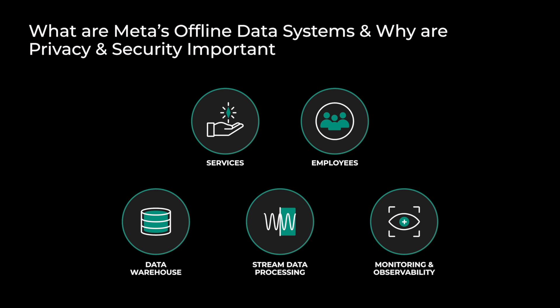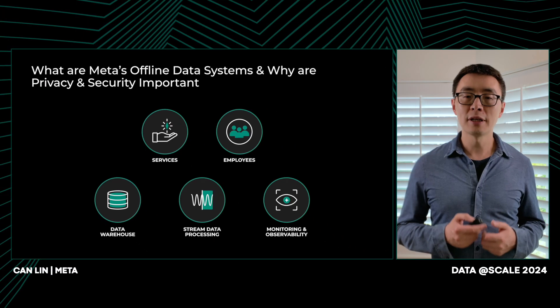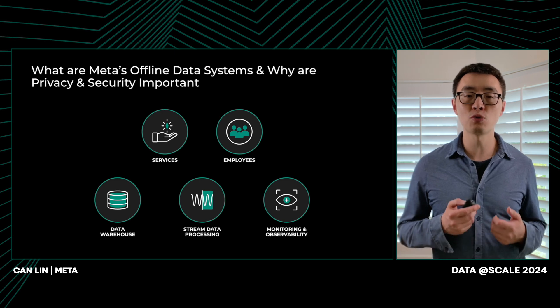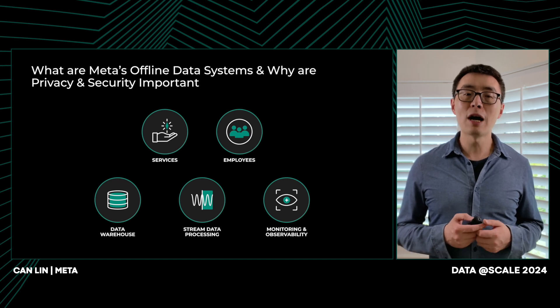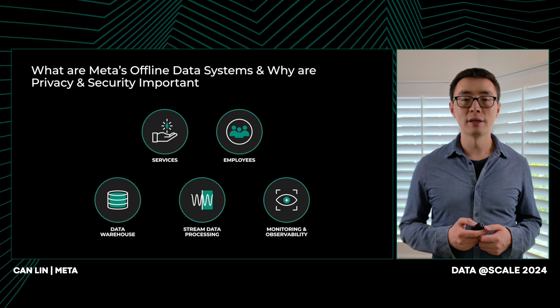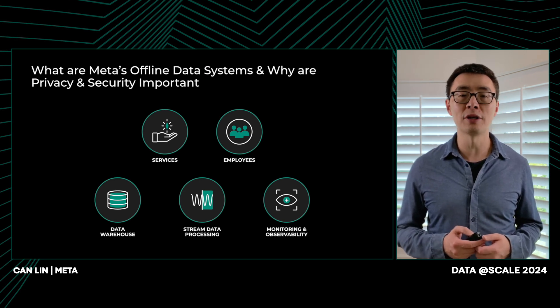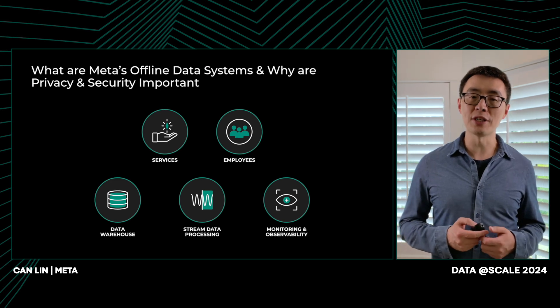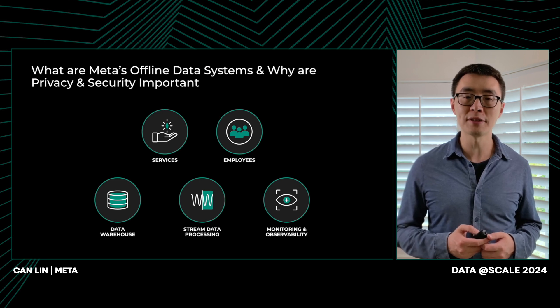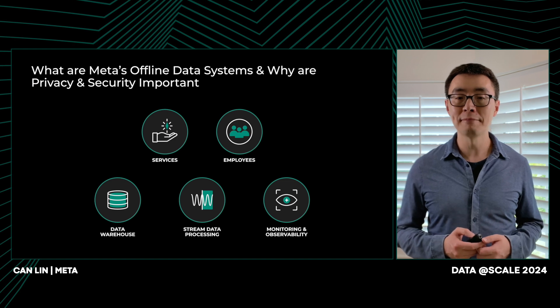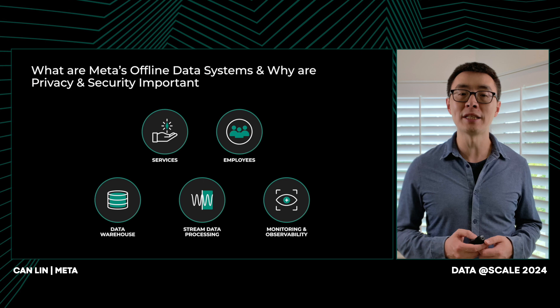So what is Meta's offline data systems? Meta operates large-scale offline data systems across data warehousing, stream data processing, and service monitoring and observability. Collectively, they support use cases across analytics, stream data processing, and service monitoring and operation. They are also important upstream of machine learning. Batch and streaming data are key sources of machine learning features. Enforcing privacy, security, and other data management and governance concerns are very important for this data infrastructure because of the volume of data, the scale of the system, and the wide variety of use cases.